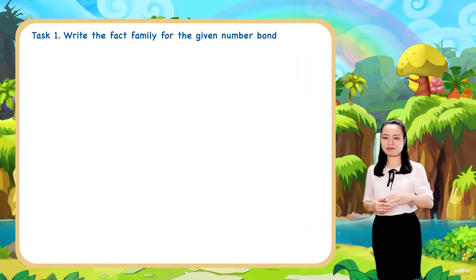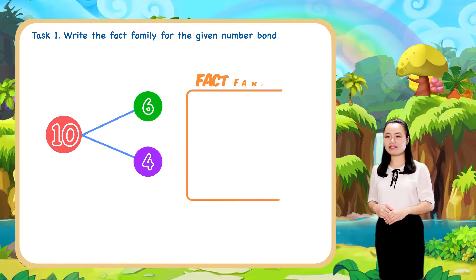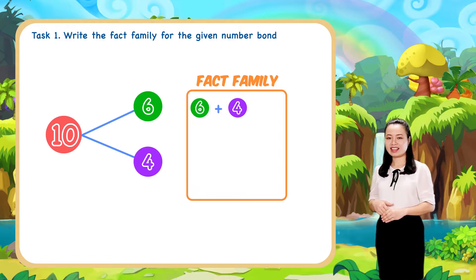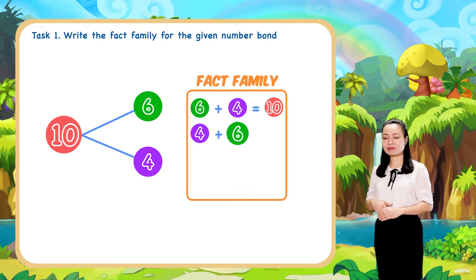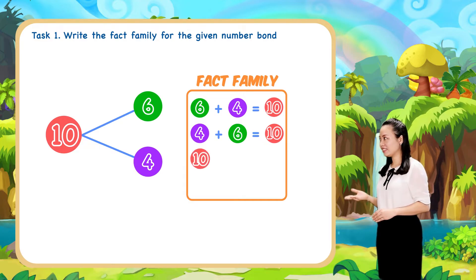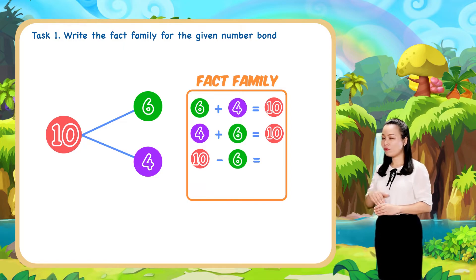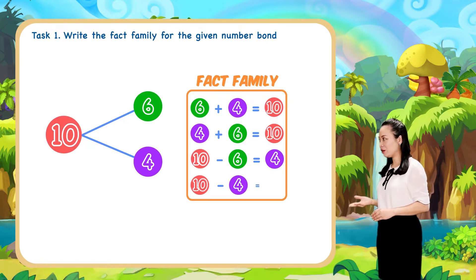Next, for this number bond, we can write the fact family: 6 plus 4 equals 10, 4 plus 6 equals 10, 10 minus 6 equals 4, and 10 minus 4 equals 6.